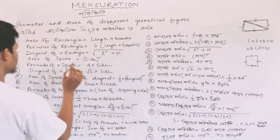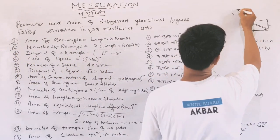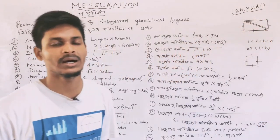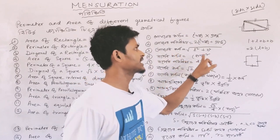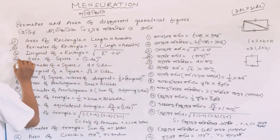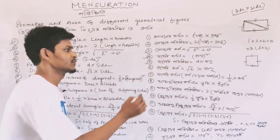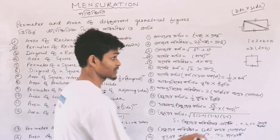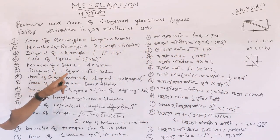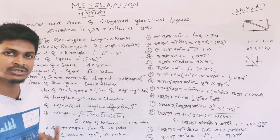Now the next part is the area of square. The area of square is side squared. The square root of 25 is 5. So the area of square formula is side squared.